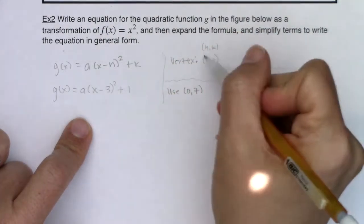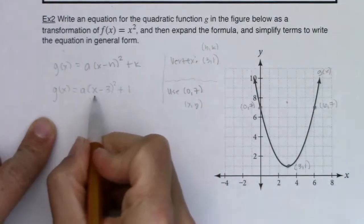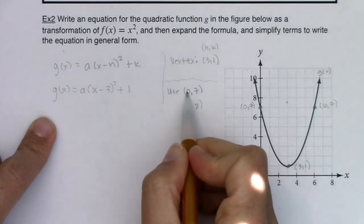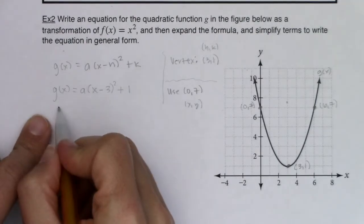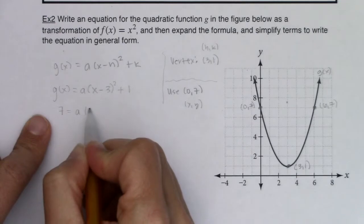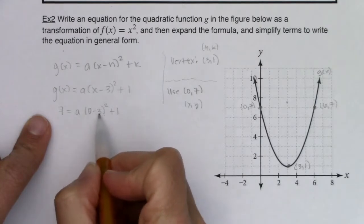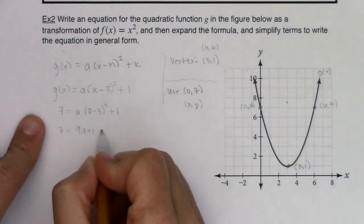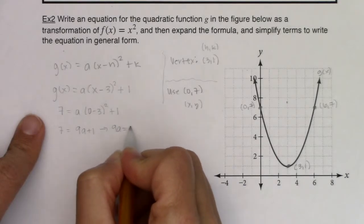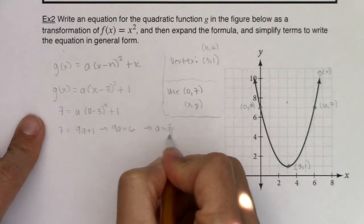And when I use (0, 7), they're not h and k. These are respectively, this is an ordered pair x and y. So let me go ahead and plug this in. I know when x is 0, y is 7. Or when x is 0, g(x) is 7. So we're going to go 7 is equal to a times (0 - 3)² + 1. Let's see what we're getting. 0 minus 3 is -3. -3 squared is 9. So I'm going to get 7 is equal to 9a + 1. That's telling me that 9a is equal to 6. That's also then telling me a is equal to 2/3.